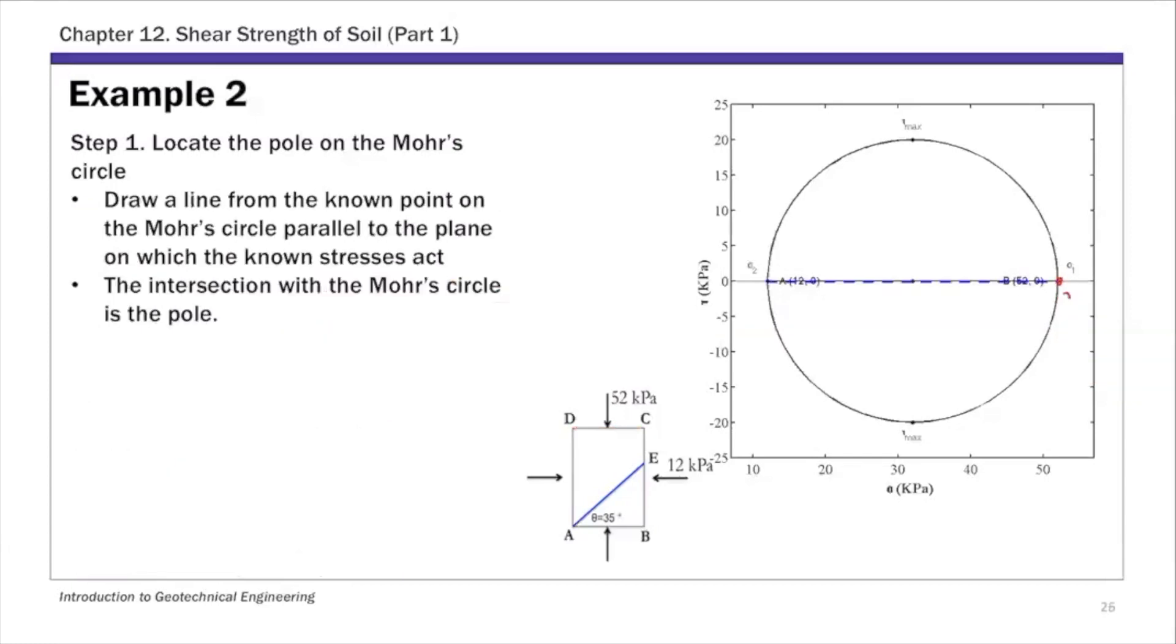From this point representing plane CD, you draw a line parallel to that plane. Since plane CD is horizontal, I'll draw a horizontal line. Starting from point (52, 0), draw a line parallel to plane CD. The intersection gives the pole. Remember, there's one pole per Mohr circle. That's step one.